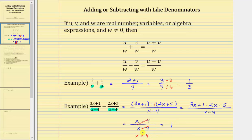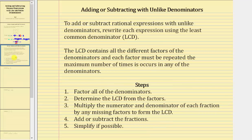Now let's talk about adding or subtracting when we have unlike denominators. To add or subtract rational expressions with unlike denominators, we need to rewrite each expression using the least common denominator, or LCD. The LCD contains all the different factors of the denominators, and each factor must be repeated the maximum number of times it occurs in any of the denominators.